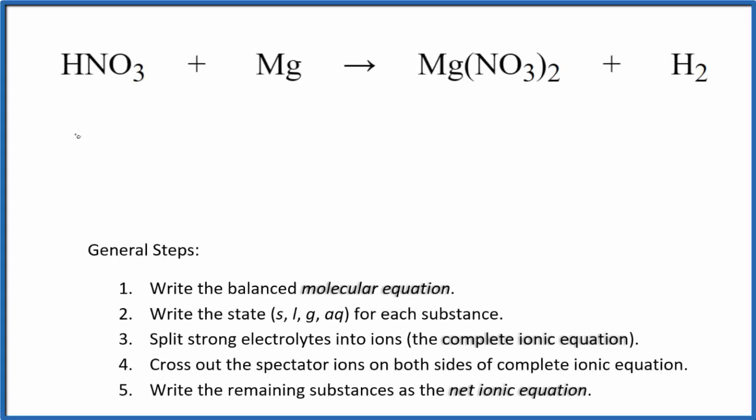Let's write the balanced net ionic equation for HNO3 plus Mg. This is nitric acid and this is magnesium metal. So the first thing we need to do is balance the molecular equation.